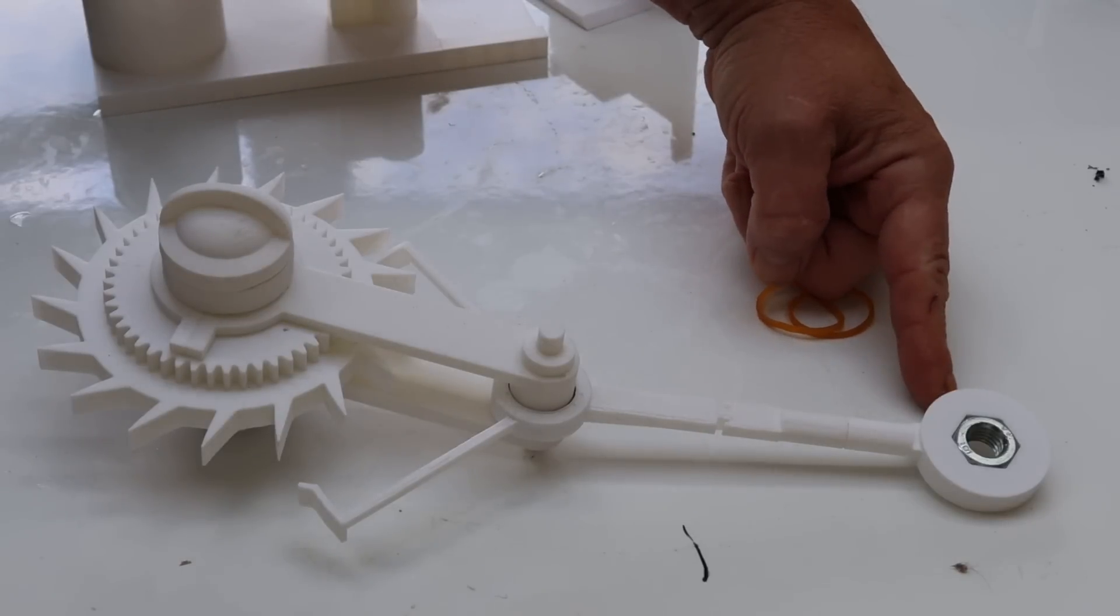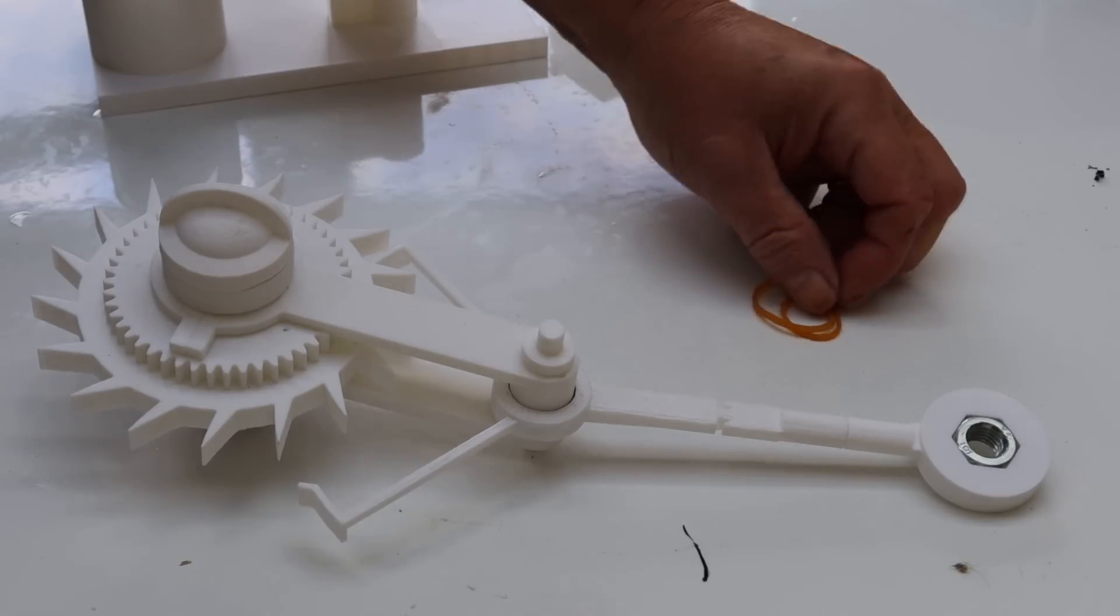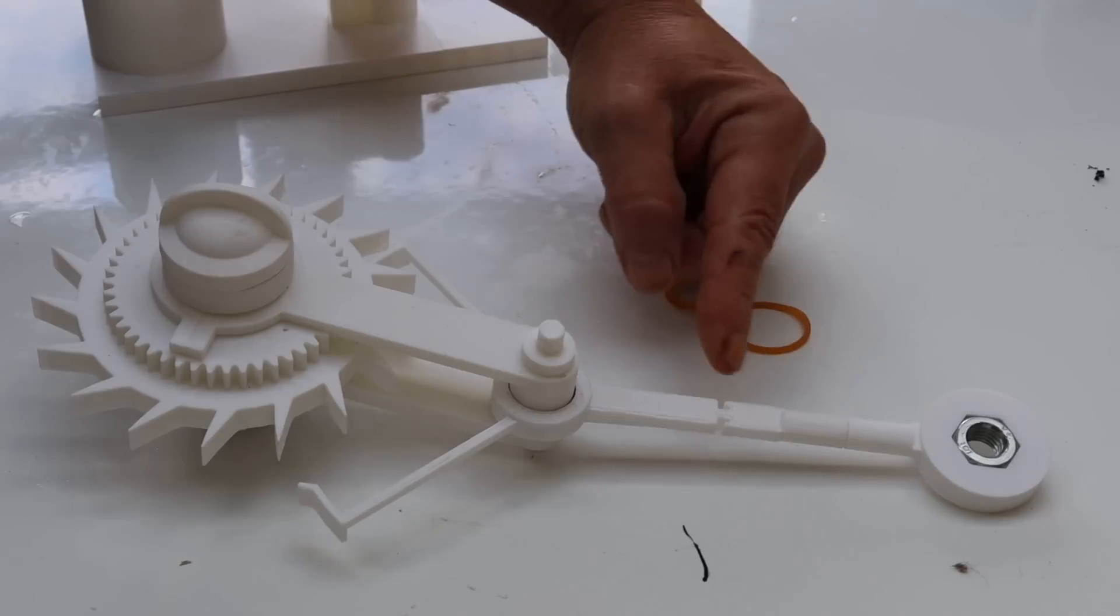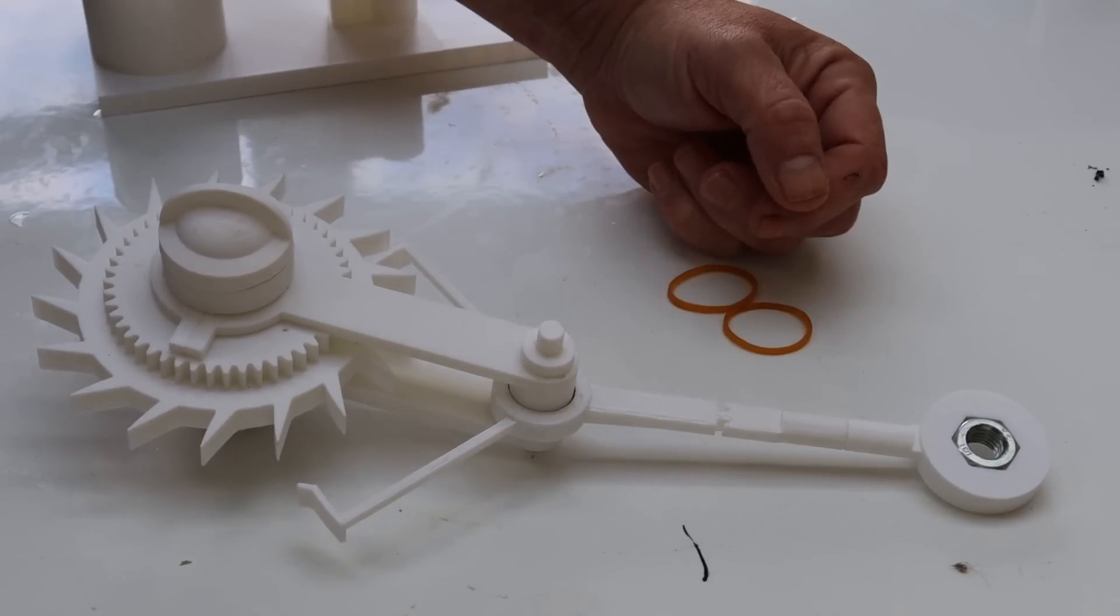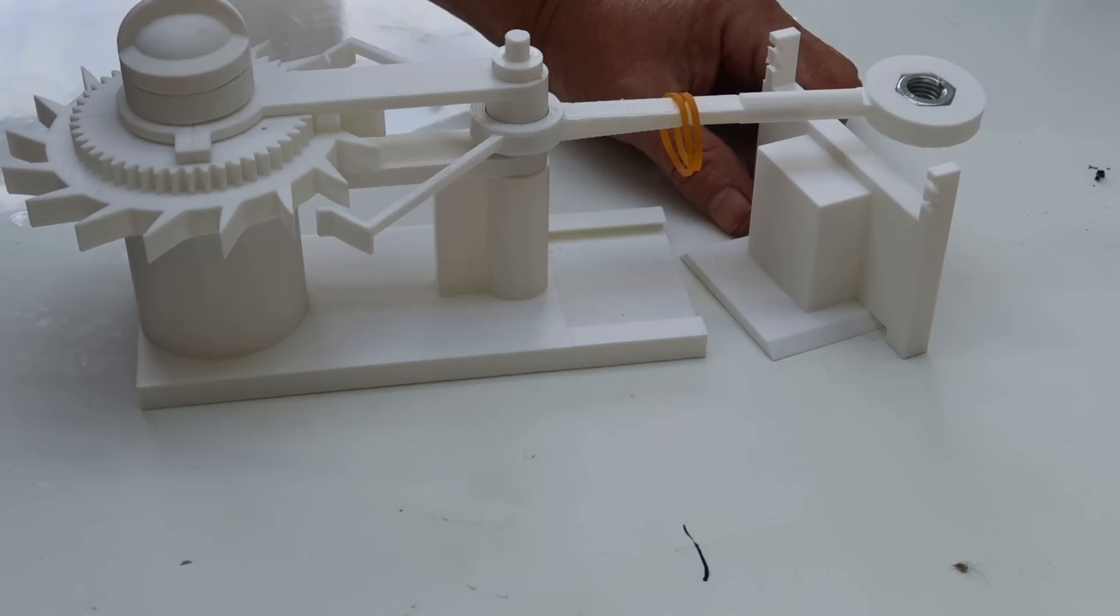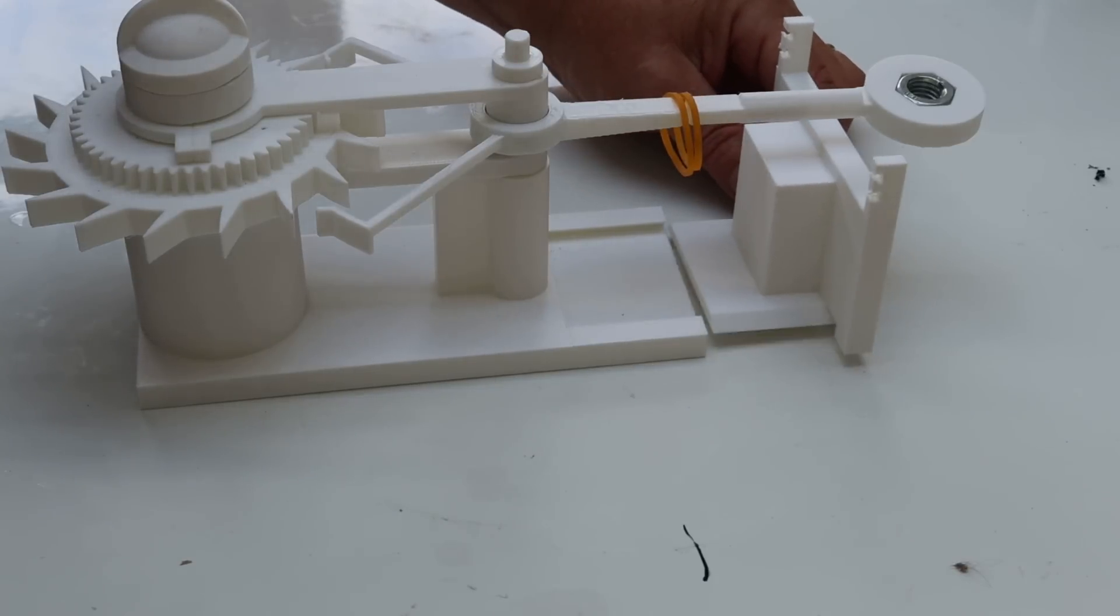Once we've done that and shoved an M12 nut in there to act as a weight, then we put two tiny rubber bands around it to those notches and shove it in the rest. Like that. And that's where this comes in.